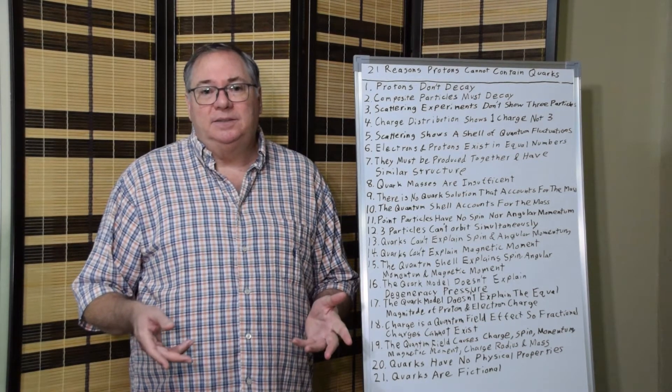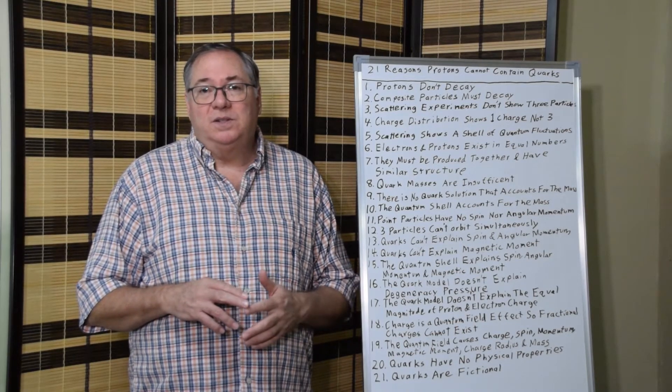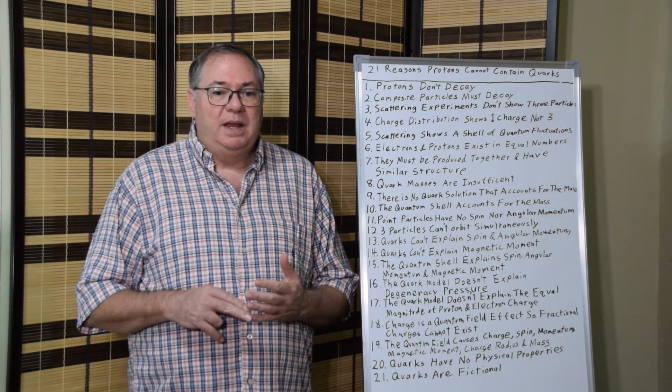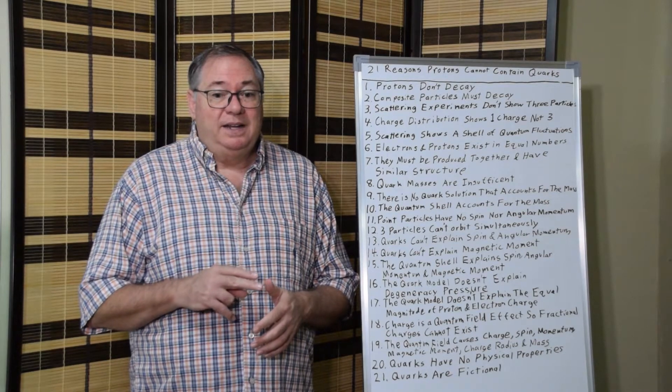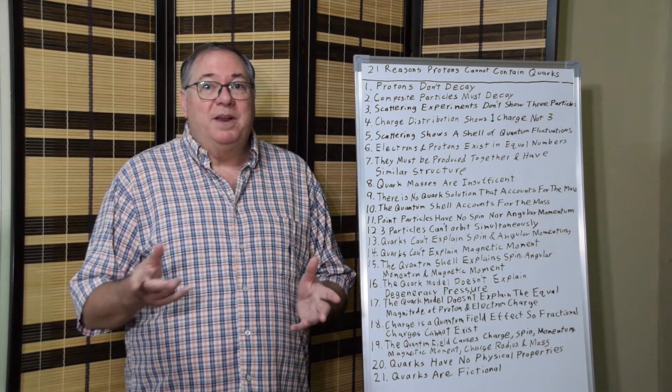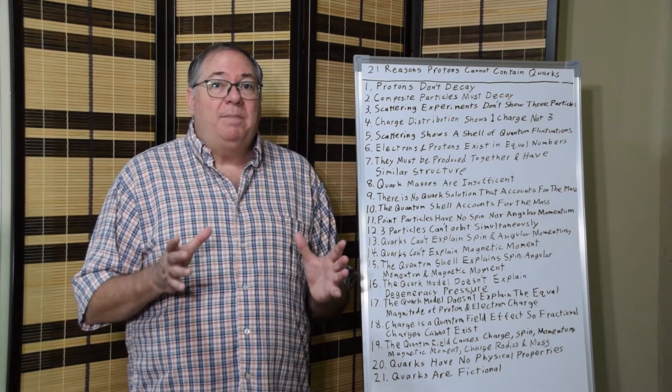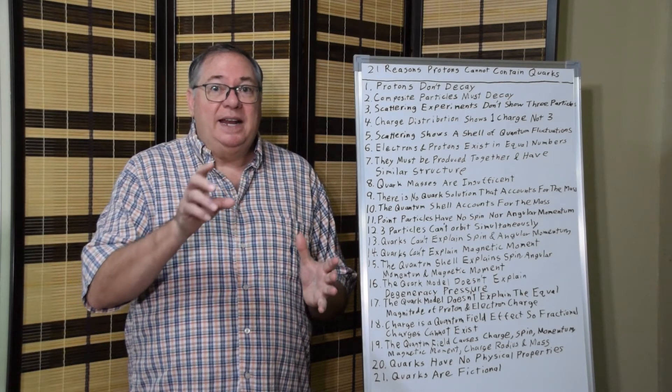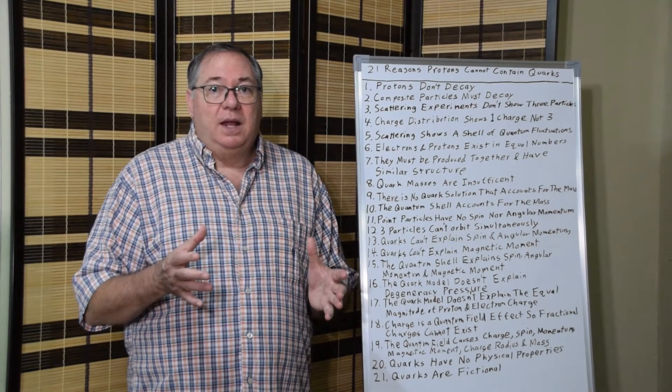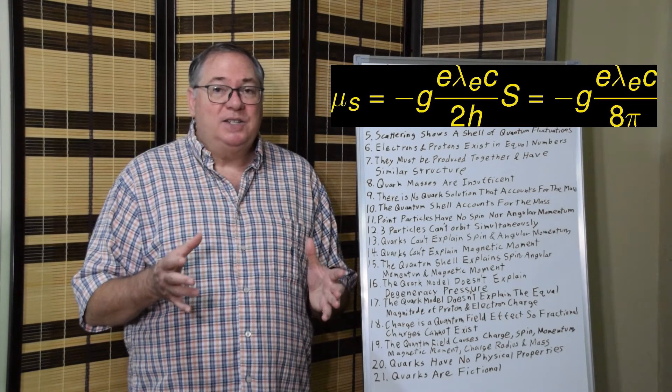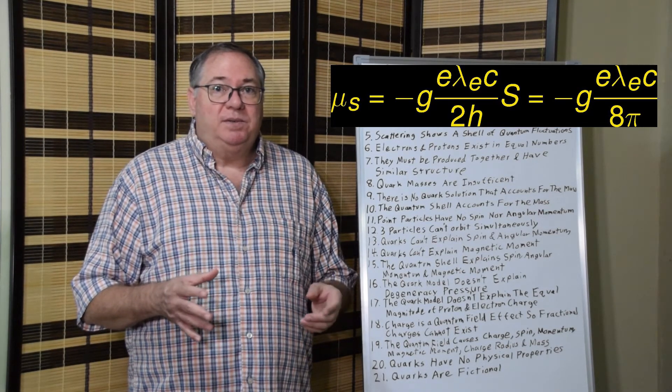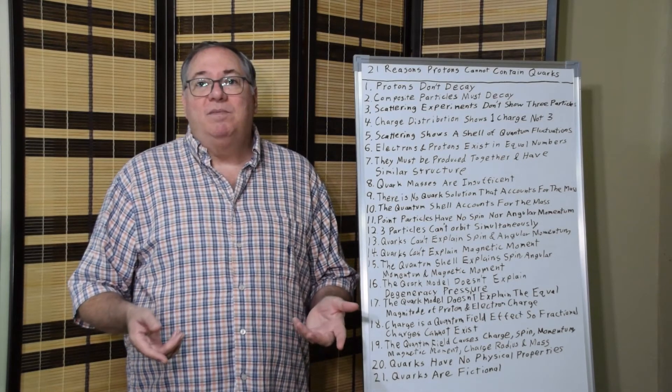So 19, the quantum field causes charge, spin, angular momentum, magnetic moment, the charge radius of the proton, its mass, and also degeneracy pressure. I haven't mentioned the radius yet, but what happens since we're looking at rotating quantum fluctuations forming the shell around the proton, the magnetic moment equation tells us that it's rotating at the speed of light. And so the speed of light limit is what gives us the radius of the proton. And it's a quantum field effect.